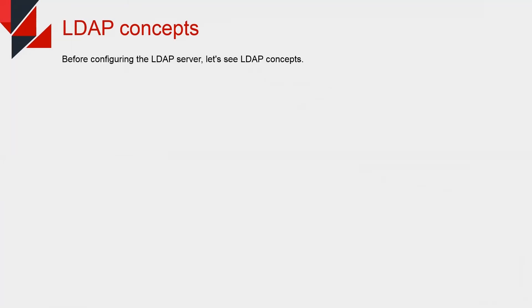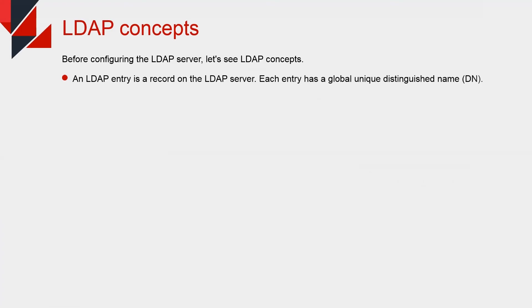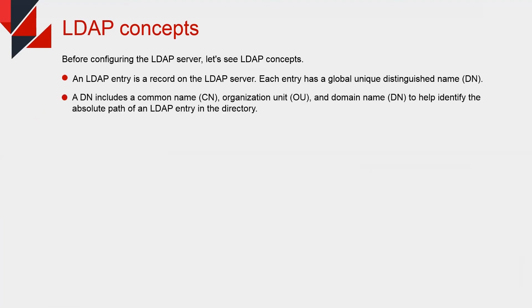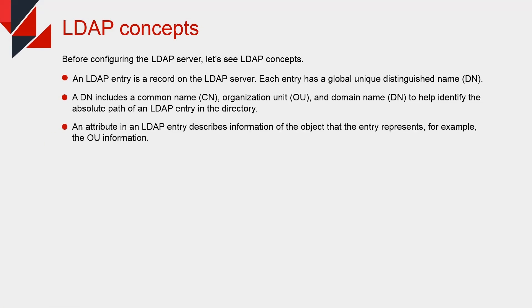LDAP Concepts. Before configuring the LDAP server, let's review LDAP concepts. An LDAP entry is a record on the LDAP server. Each entry has a globally unique distinguished name, or DN. A DN includes a common name (CN), organization unit (OU), and domain name (DC) to help identify the absolute path of an LDAP entry in the directory. An attribute in an LDAP entry describes information of the object that the entry represents, for example, the OU information.